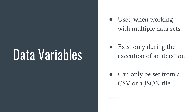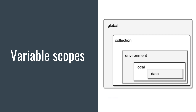Last but not least, data variables. You'll encounter them when working with multiple data sets. If you need to execute the same request against different data sets, you have to use data variables — this is not an alternative, it's the only way. Data variables only exist during the iteration's execution, and iterations are created from the collection runner or from Newman. The only way to set data variables is by defining them in a CSV or JSON file.